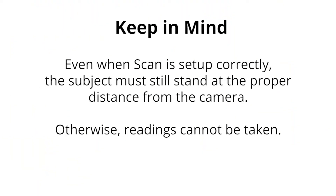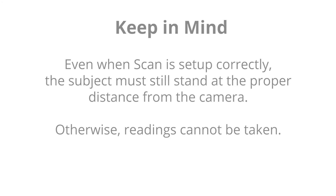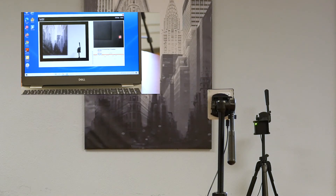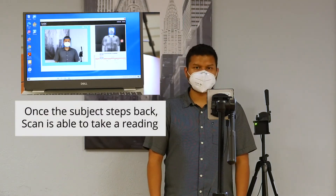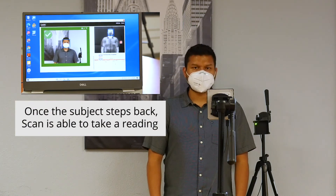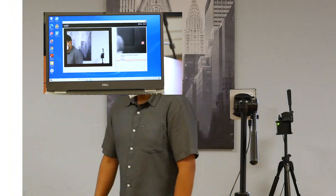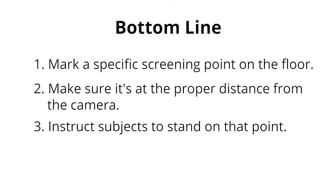Keep in mind that even when SeekScan is set up correctly, the subject must stand at the correct distance from the camera. In this example, even when everything else is right, SeekScan cannot take a reading because the subject is standing too close to the camera. To avoid these errors, mark a designated point on the floor of your screening area. Make sure it's at the right distance and instruct subjects to stand on that point.